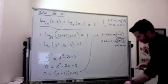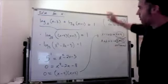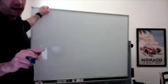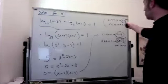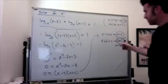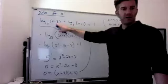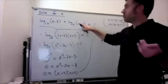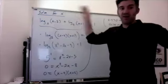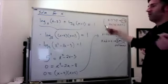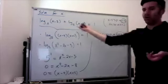Always check answers against the original expression. If either argument of a logarithm is negative for a given answer, that answer is extraneous. Sometimes both answers are valid, sometimes neither, but most often only one is good. Always check all answers.